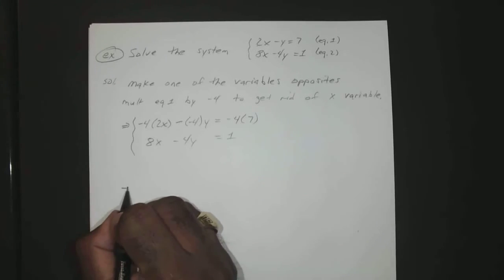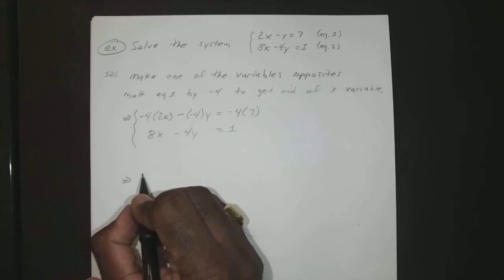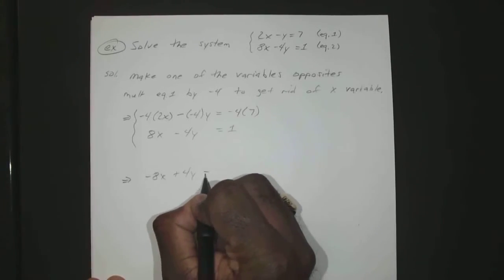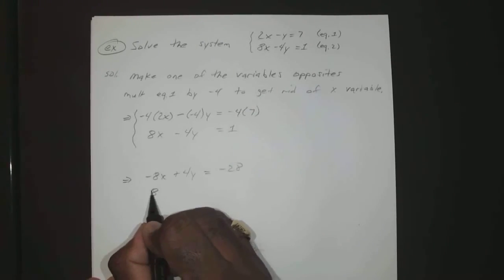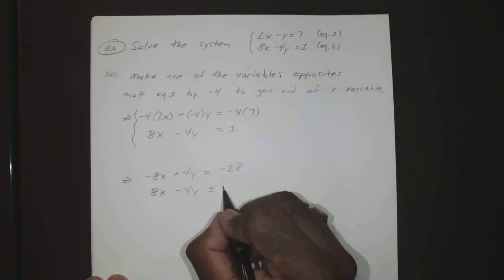Which means if we go ahead and simplify that first one, we have -8x + 4y = -28, and 8x - 4y = 1.